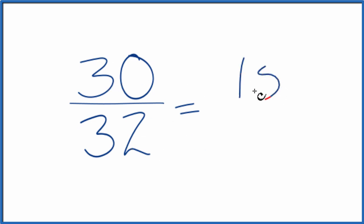32 divided by 2 is 16. And we really can't simplify this any further—there's no factor that goes into both 15 and 16 other than 1. So 15/16ths, that's the simplified fraction for 30/32.